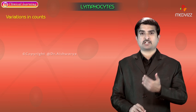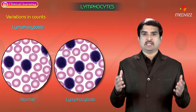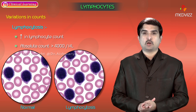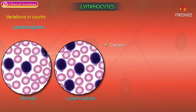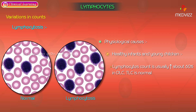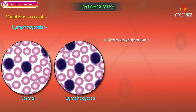Lymphocytosis means an increase in lymphocyte count where the absolute lymphocyte count is greater than 4000 per microliter. The causes are physiological and pathological. Physiological causes include healthy infants and young children, where lymphocyte count is usually high at approximately 60% in DLC but TLC is normal — this is relative lymphocytosis. In females, lymphocytes are increased during menstruation.